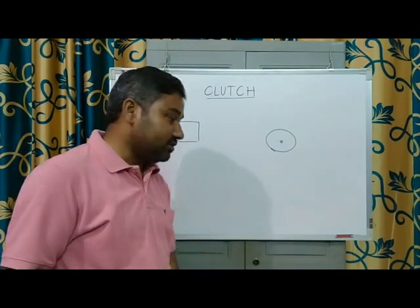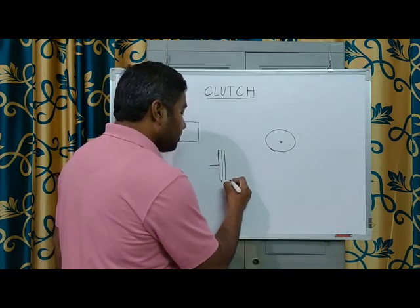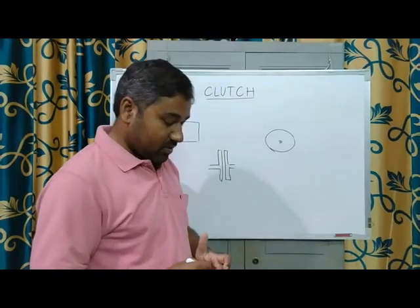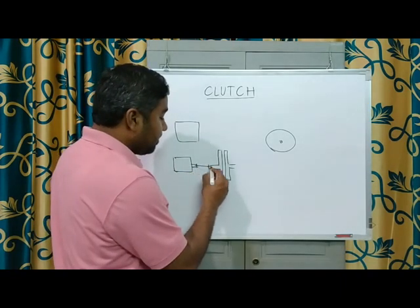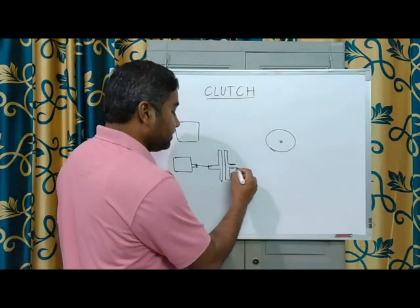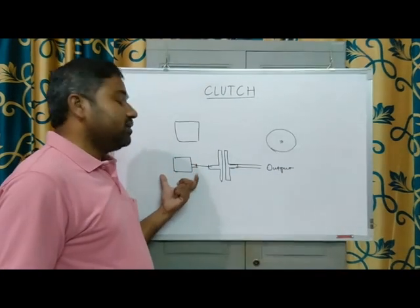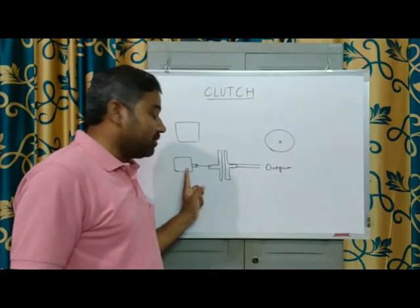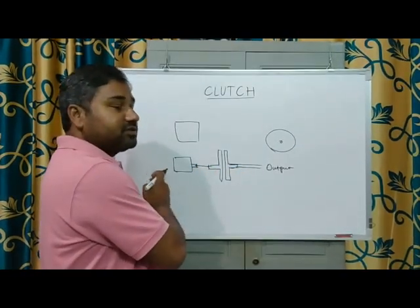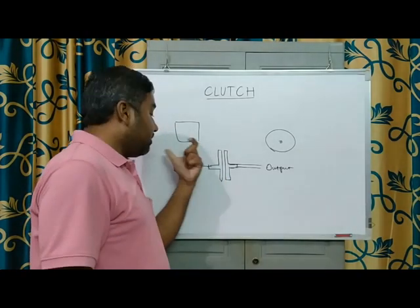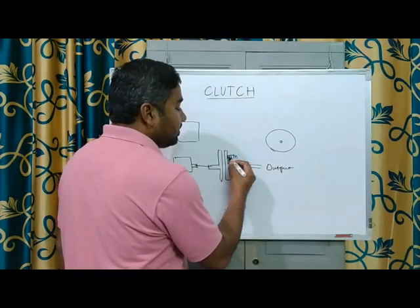A clutch is an element which works on the friction principle. We have two plates — one receives power from the prime mover, these two are friction plates, and this is connected to the output. If this is running at full RPM, this will also run at full RPM because they are rigidly connected. But because this is friction-dependent, the more we press one plate on the other, the more power it will transmit. If completely pressed, all power is transmitted. To control how much it is pressed, we make use of springs.